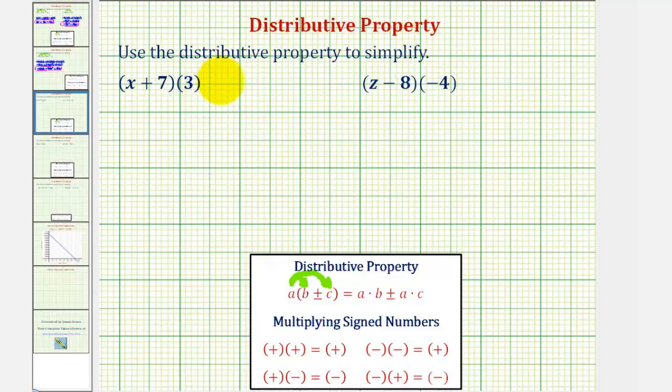we could rewrite this if we wanted to as three times the quantity x plus seven. And then it would look more like our previous examples. But this really isn't necessary as long as we multiply both terms inside the parentheses by positive three.